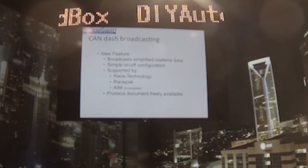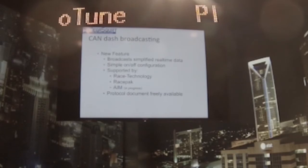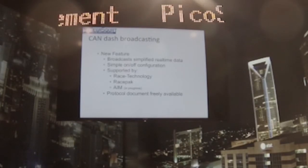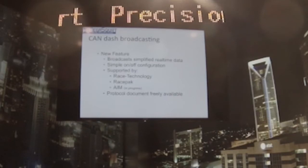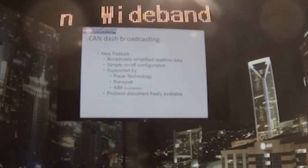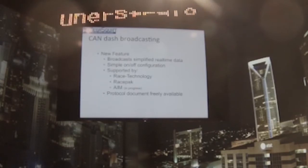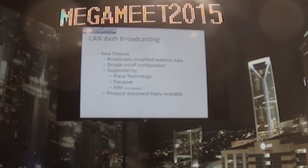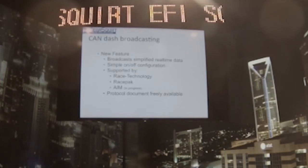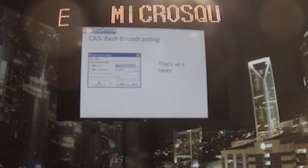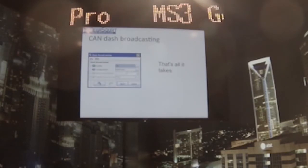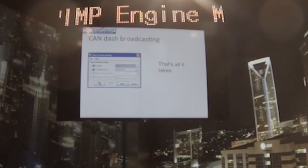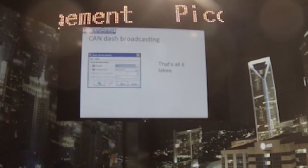We've also been working with some third-party dash vendors on a simplified version called DASH Broadcasting. It just picks out the highlights and fields you want on a dash — you haven't got all the other stuff, just four settings pages. Currently we've got Race Technology, a few vendors, and the DIY guys who work with the RacePack CAN adapter, so you can run a RacePack dash with any Megasquirt 2 or 3 product. For DASH Broadcasting, there's just one setting — you turn it on, and that's it.